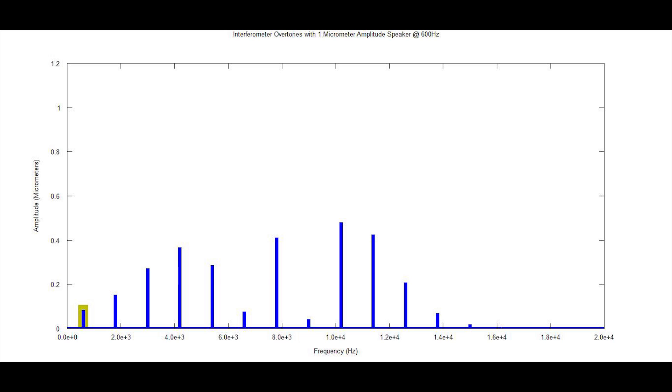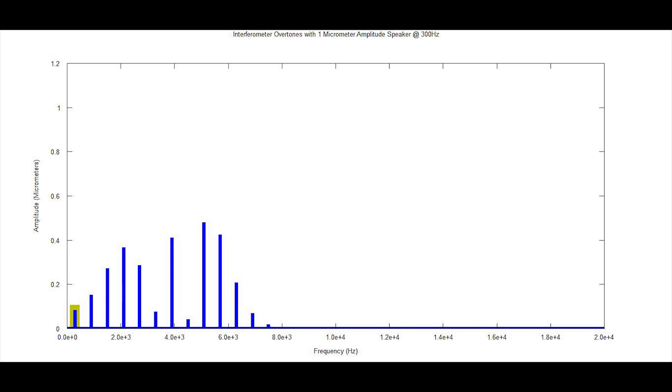If we do want to increase the presence of our overtones, all we have to do is increase the amplitude of our mirrored speaker. Here we see the frequencies in the processed signal when the amplitude of our sine wave was set to 1 micrometer. Now we see the overtones from the same frequency signal being played with an amplitude of 3 micrometers.